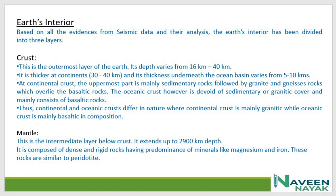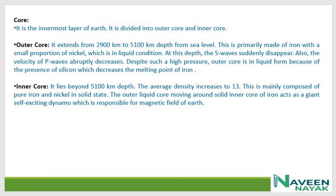The mantle is the second layer of the Earth interior — an intermediate layer between the crust and the core. It extends up to 2,900 km depth and is composed of dense and rigid rocks with a predominance of minerals like magnesium and iron, similar to peridotite. The core is the innermost layer, divided into outer core and inner core. The outer core is in liquid state and the inner core is in solid state.